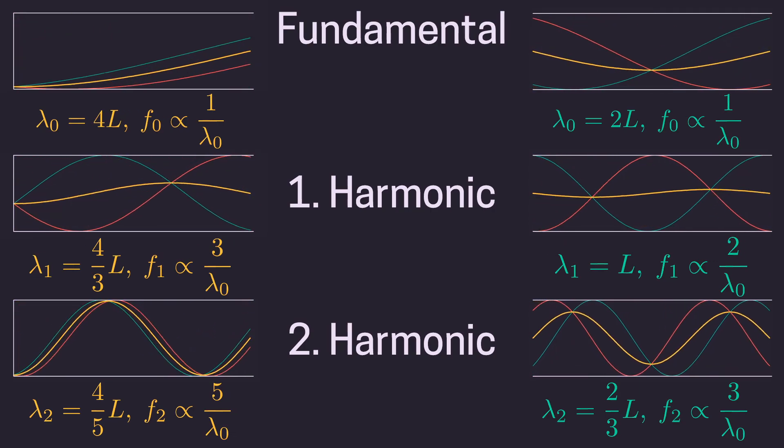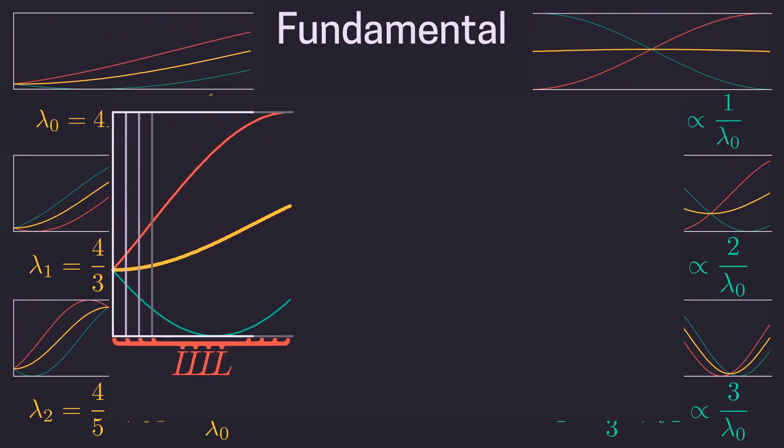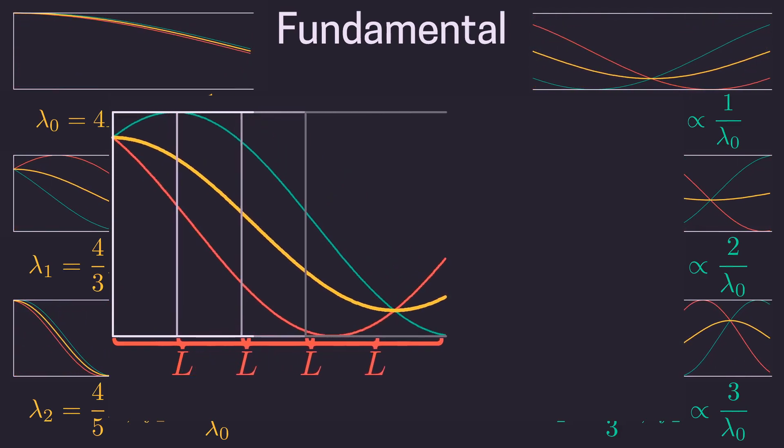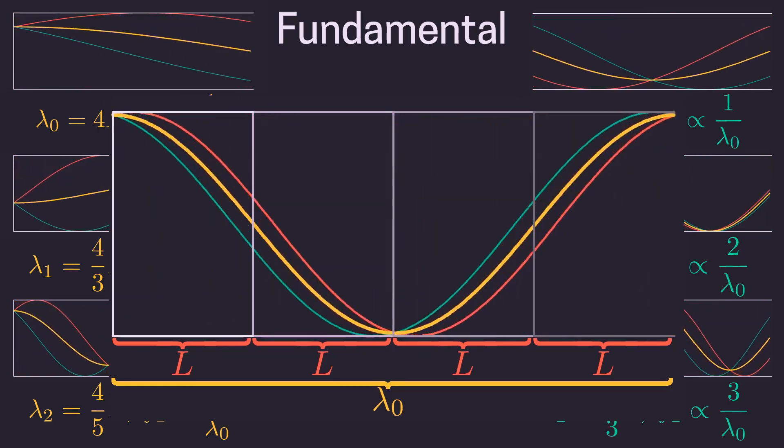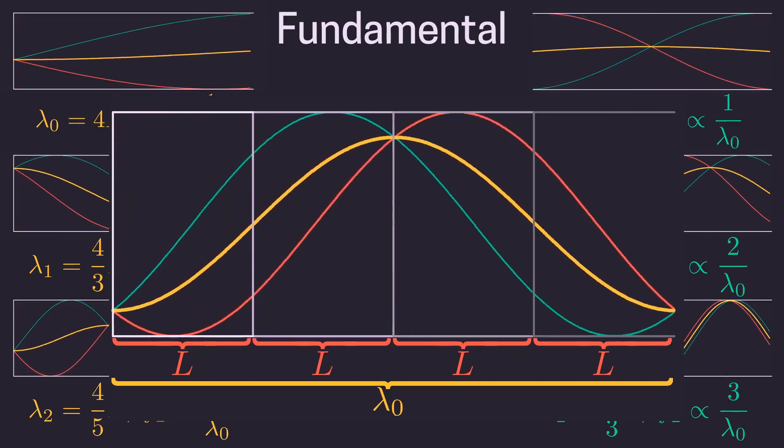For example, let's look at the fundamental of the closed pipe. You can see that the standing wave is back to the beginning after 4 times the pipe length. So the wavelength lambda is equal to 4L.